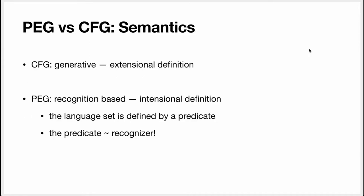Let me emphasize something. CFG are generative, which means their semantics is given by constructing the language set from the grammar through derivation. PEG, on the other hand, are recognition-based. A sentence is in the language defined by a PEG grammar only if it's recognized by the recognizer for the grammar. So to formalize PEG, we're essentially formalizing the recognizer. These are two very different mathematical approaches — CFG is easier to express in the language of mathematics, so some say it's more elegant. PEG, on the other hand, has the advantage that the formalization is very much related to the practice — it's almost your parsing algorithm.